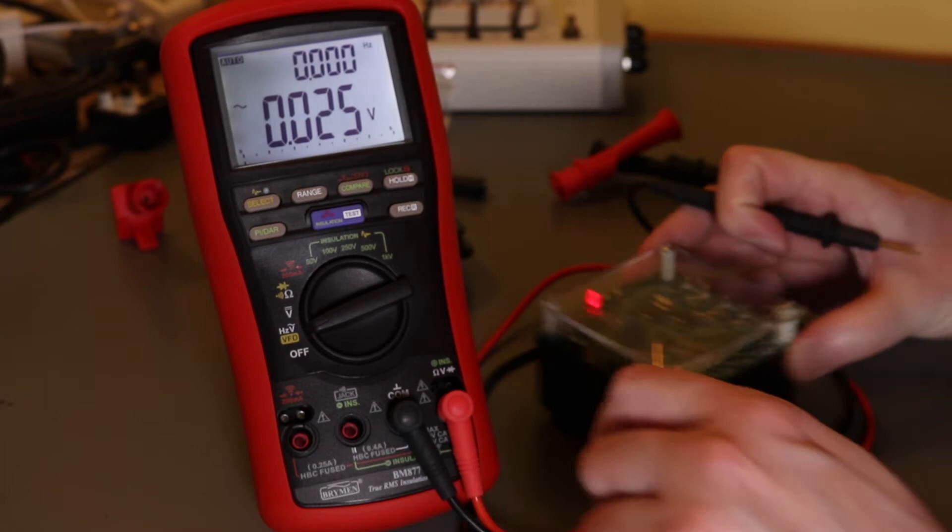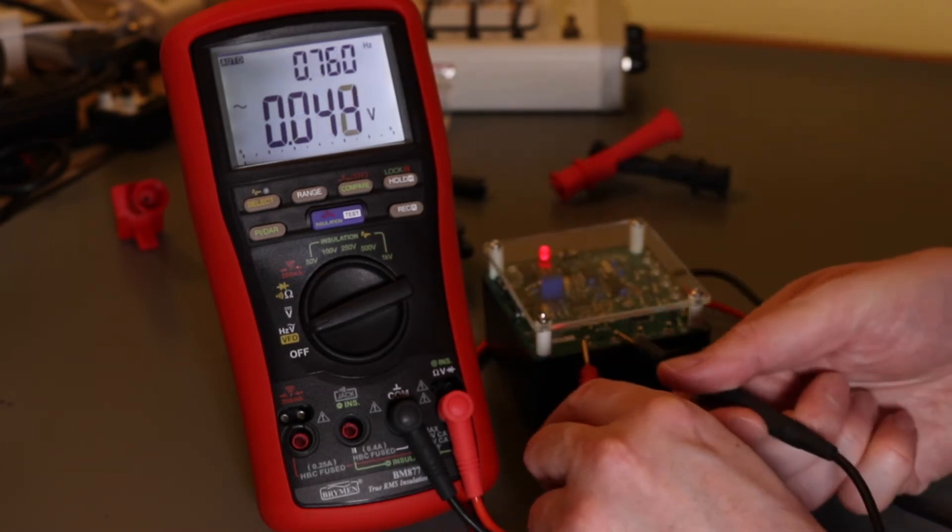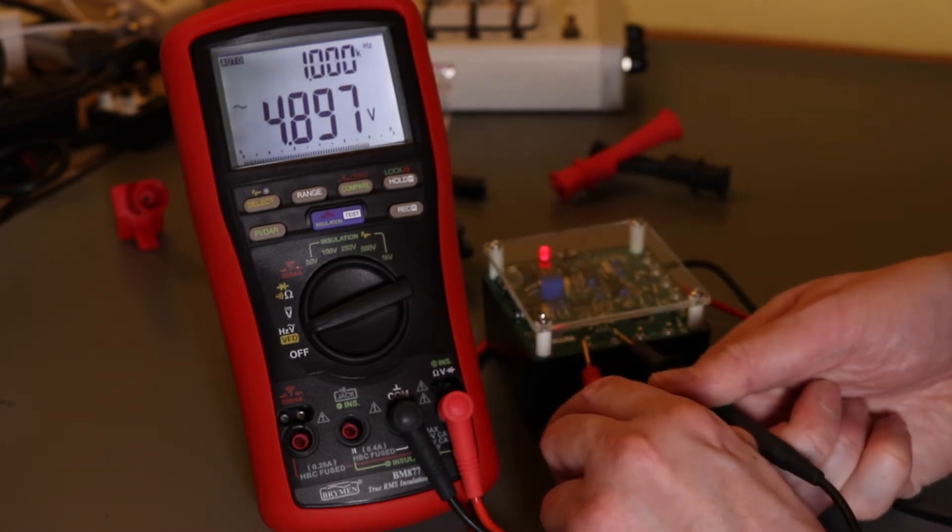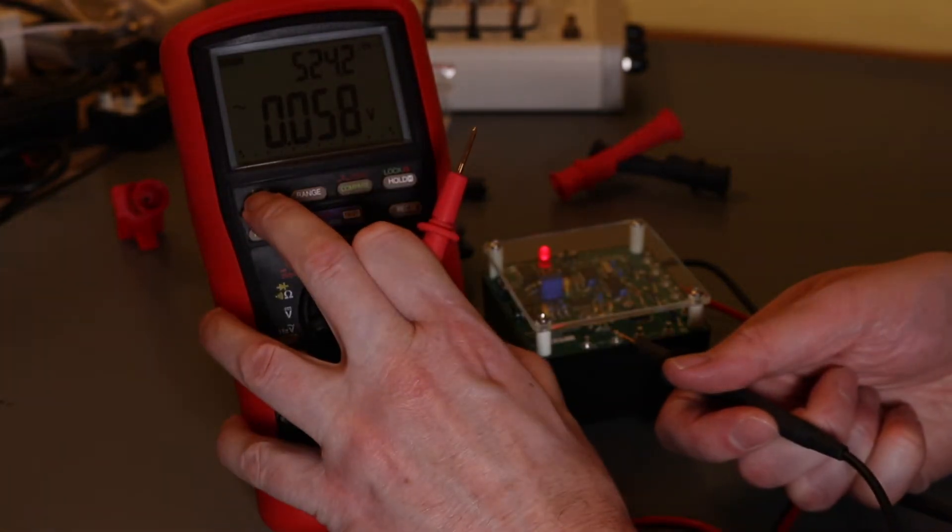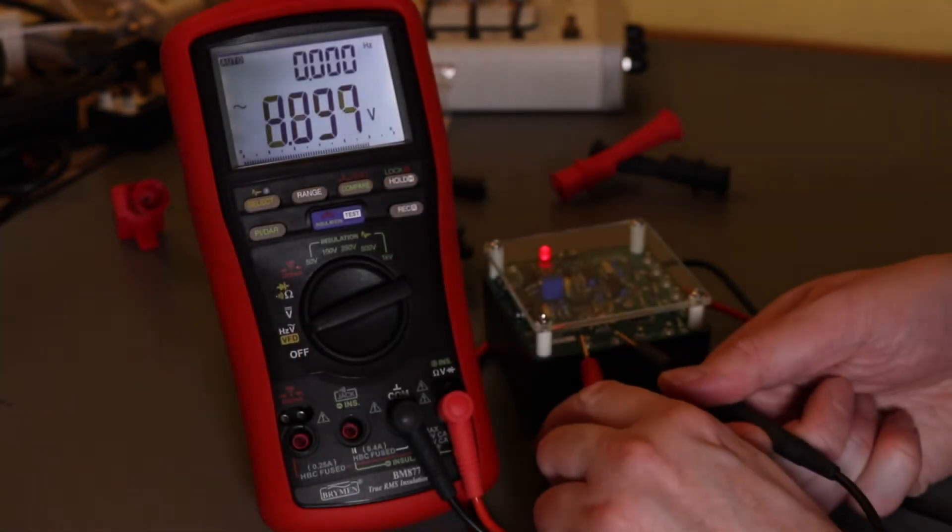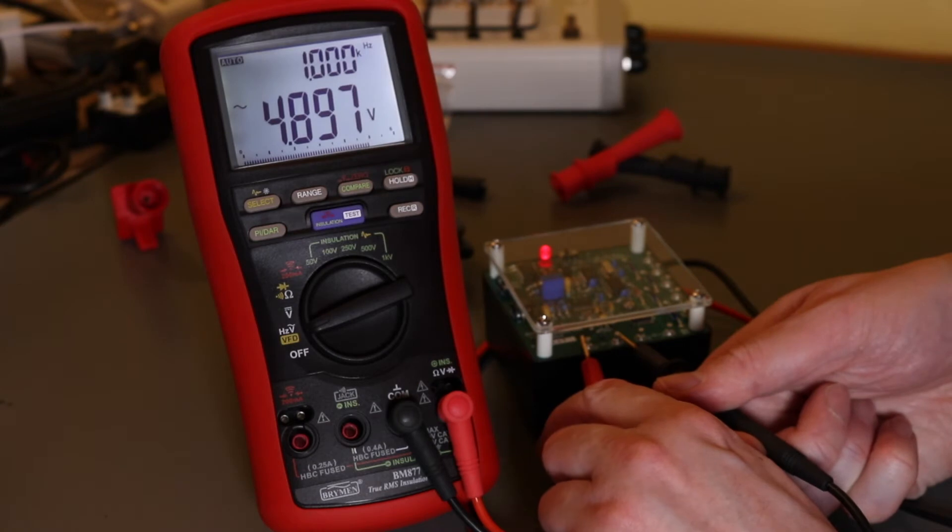If I go back to flipping up, this should be 1kHz now. So you can see the voltage reading drops a little bit as the frequency goes up, but frequency reading itself is smack on 1kHz.